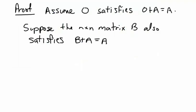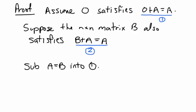Let's get into the proof. Step one: we assume the zero matrix satisfies O plus A equals A — call this equation one. Step two: we suppose that another n by n matrix B also satisfies B plus A equals A — call this equation two. Our goal is to show that O and B are actually the same matrix.